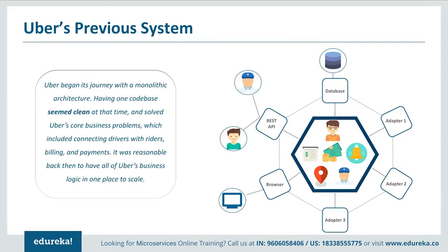Initially, Uber had a REST API connecting passengers and drivers. The mobile API was connected to the REST API, which was then connected to the monolithic architecture as a backend server. People accessing through web UI were also connected to the same server. There were three adapters performing different functionalities such as notifications, sending mails or messages, billing, and payment. Finally, a MySQL database captured all their data. All features — passenger management, billing, notification, trip management, and driver management — were composed in a single framework.